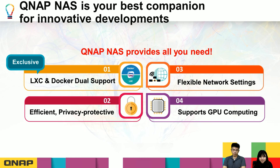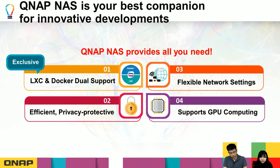QNAP NAS can be your best companion for innovative development. There are four main advantages. First, QNAP's exclusive feature of supporting both Linux containers and Docker containers on the same platform. Second, a private cloud server that provides efficiency and privacy protection, where you manage all hardware and network connections yourself. Third, flexible management of data upload and download. Fourth, support for GPU/graphics cards to provide fast computing power for containers requiring intensive processing.